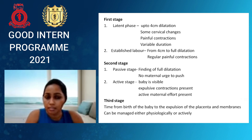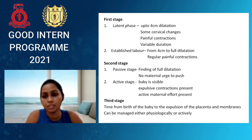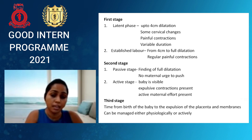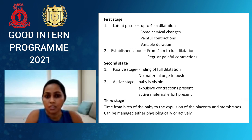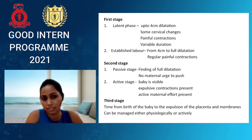The next phase of the first stage is established labour, from four centimetre dilatation up to full dilatation. Here we get regular painful contractions with increasing frequency and strength. Four centimetres to full dilatation is the established labour or the active phase of the first stage of labour. Most of the time we are admitting mothers to the labour ward at this stage.